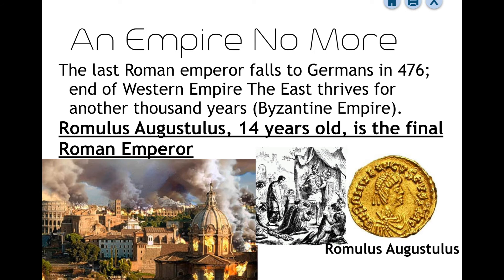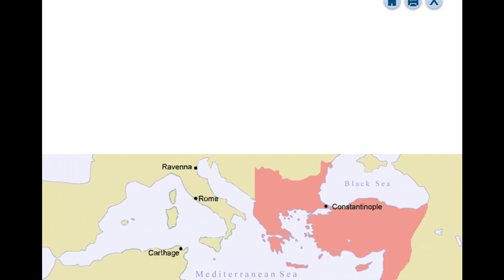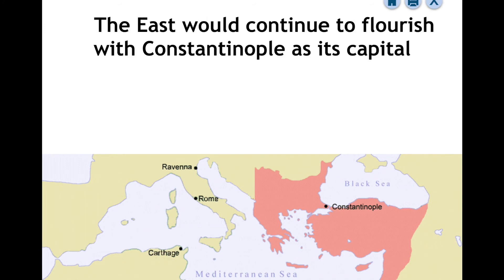As various nomadic tribes chipped away at western Rome, it eventually came to a complete fall when the capital city, Rome, fell in 476 AD to the Germanic tribes. The final emperor was Romulus Augustulus, only 14 years old. Stories about him vary, and many historical accounts were lost because records were burned when the Germanic tribes came in. Some accounts say his life was spared because he was so young — they basically let him go free, and his whereabouts after that are unknown. So at 476 AD, Rome falls.